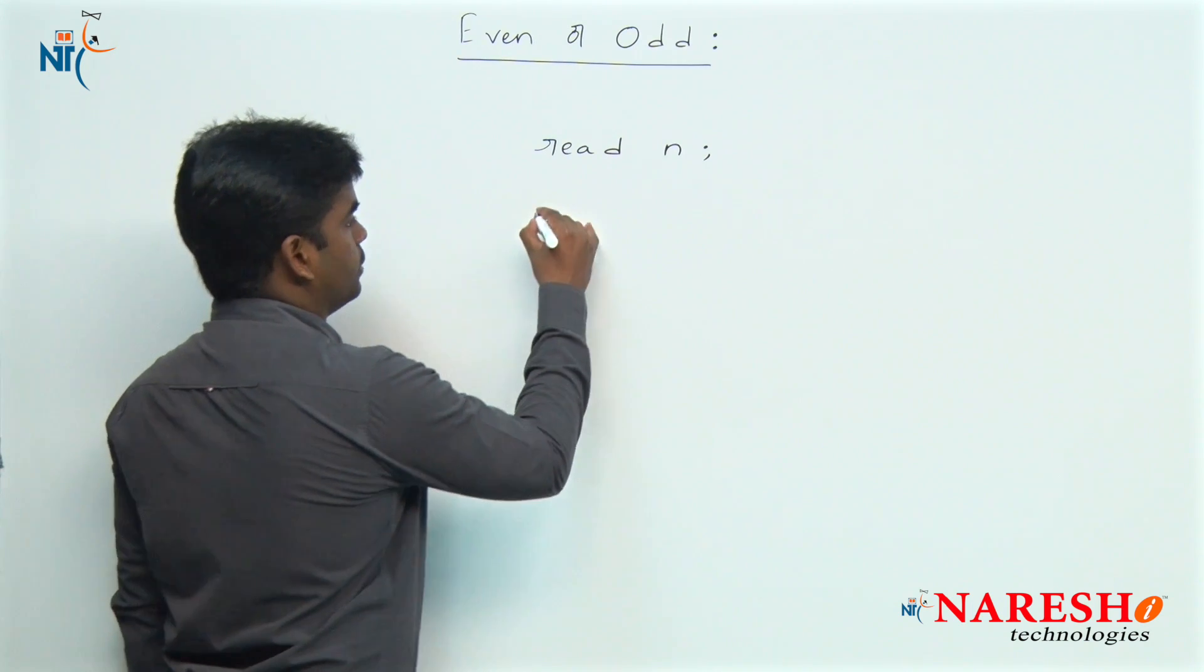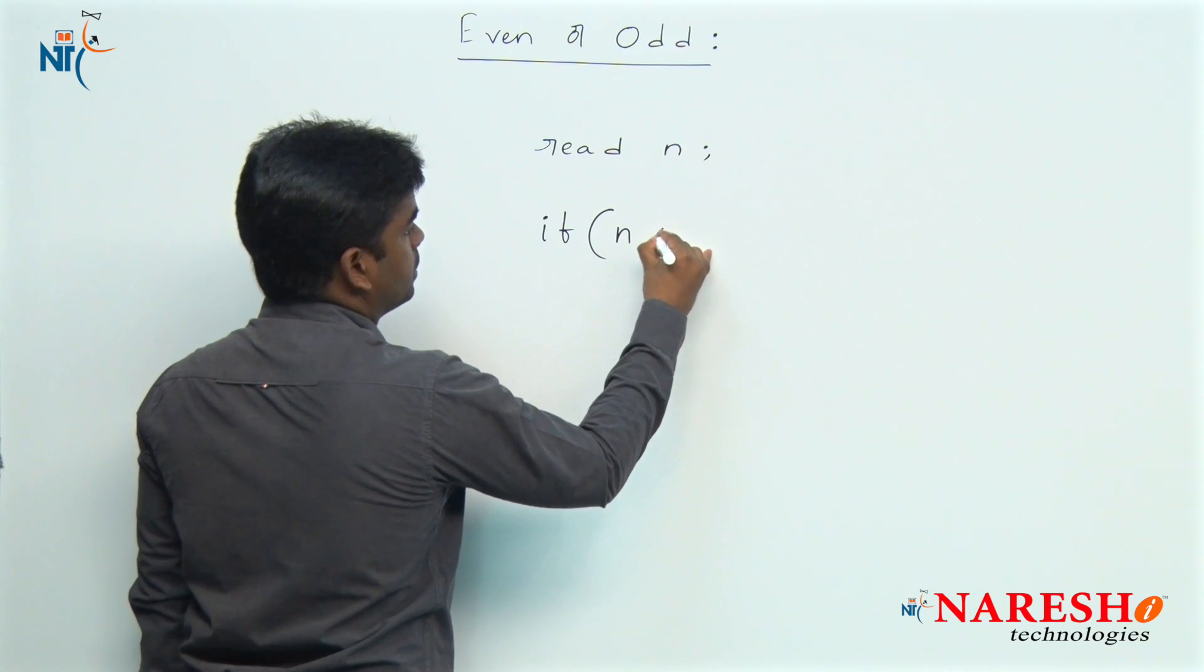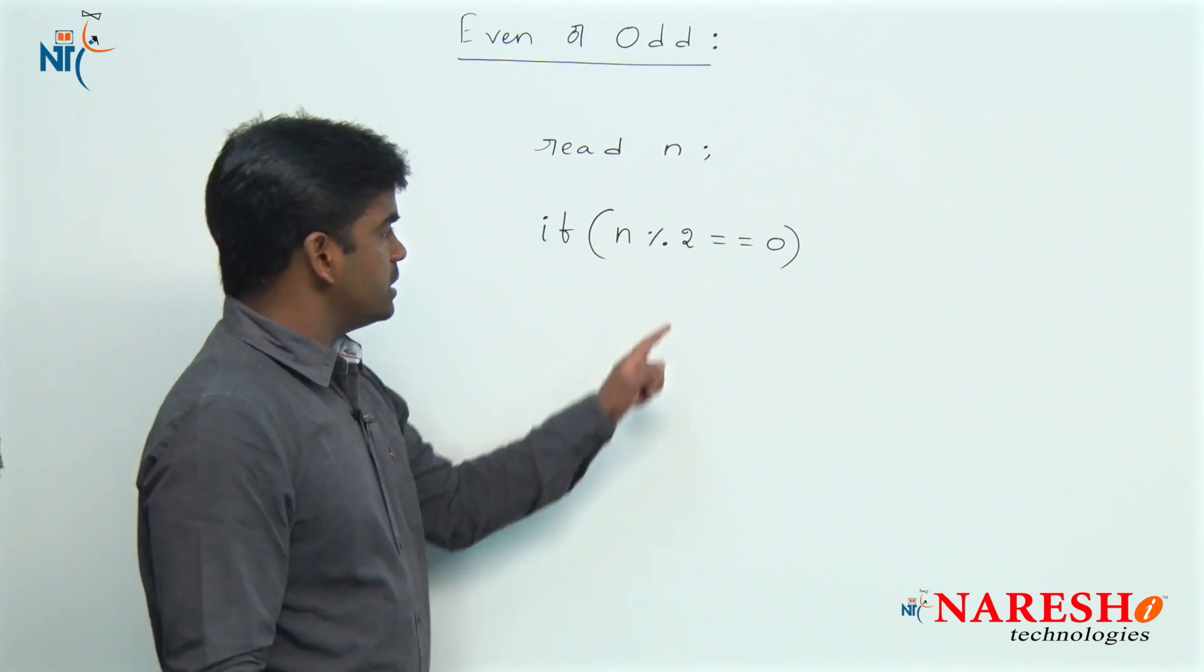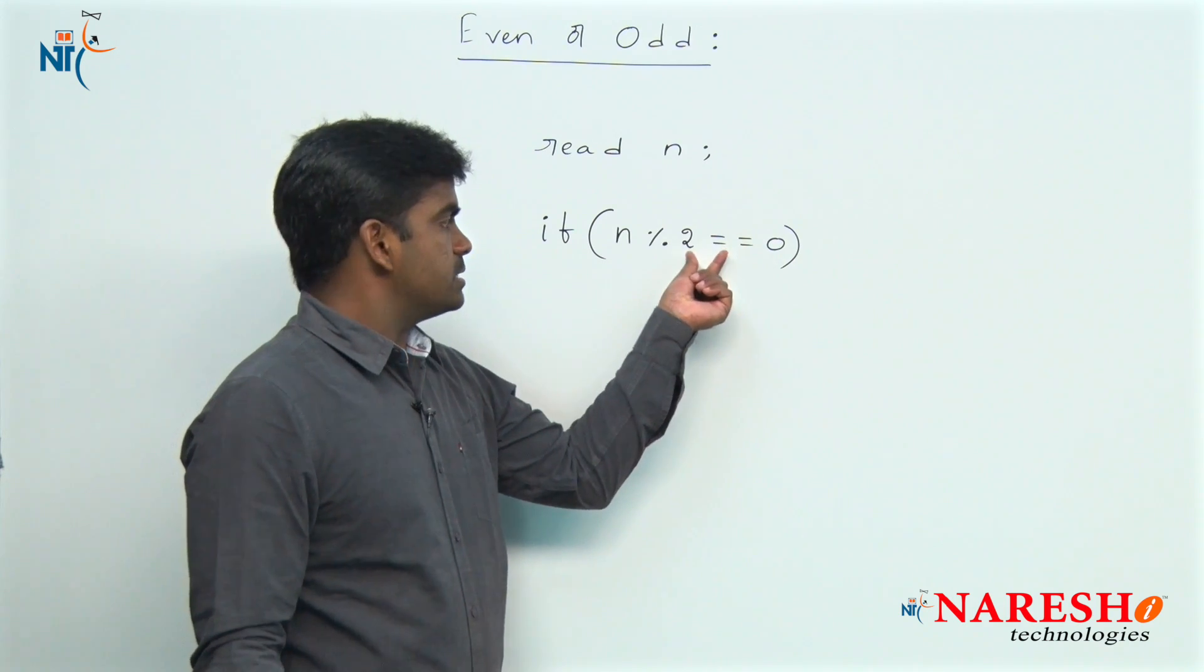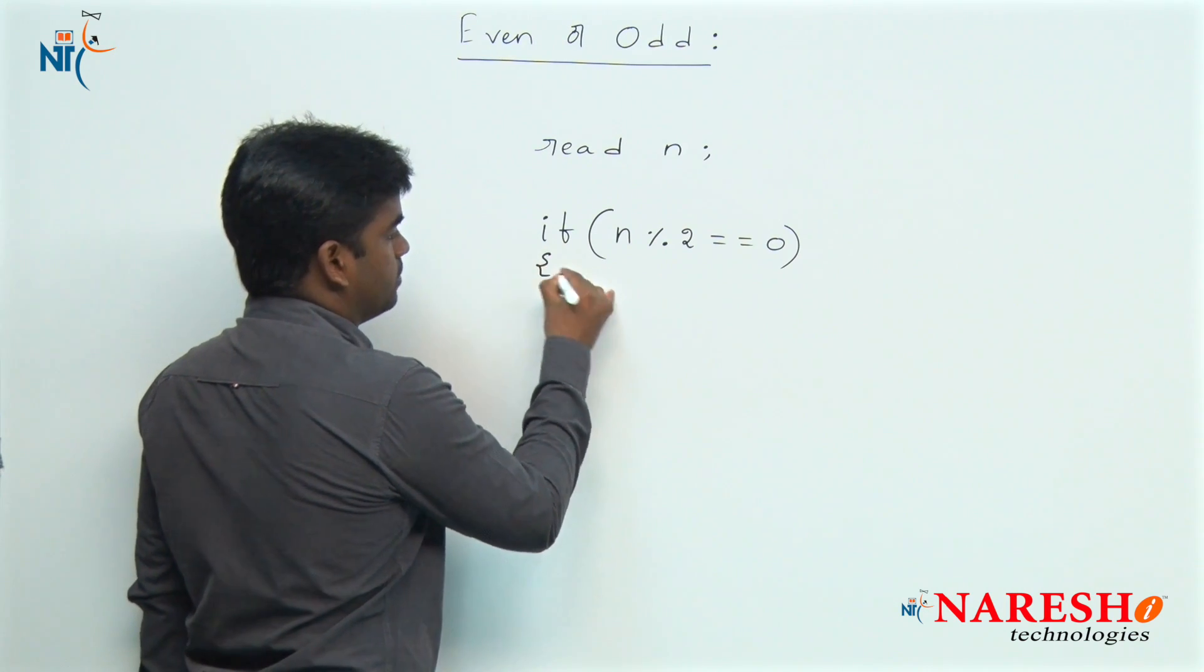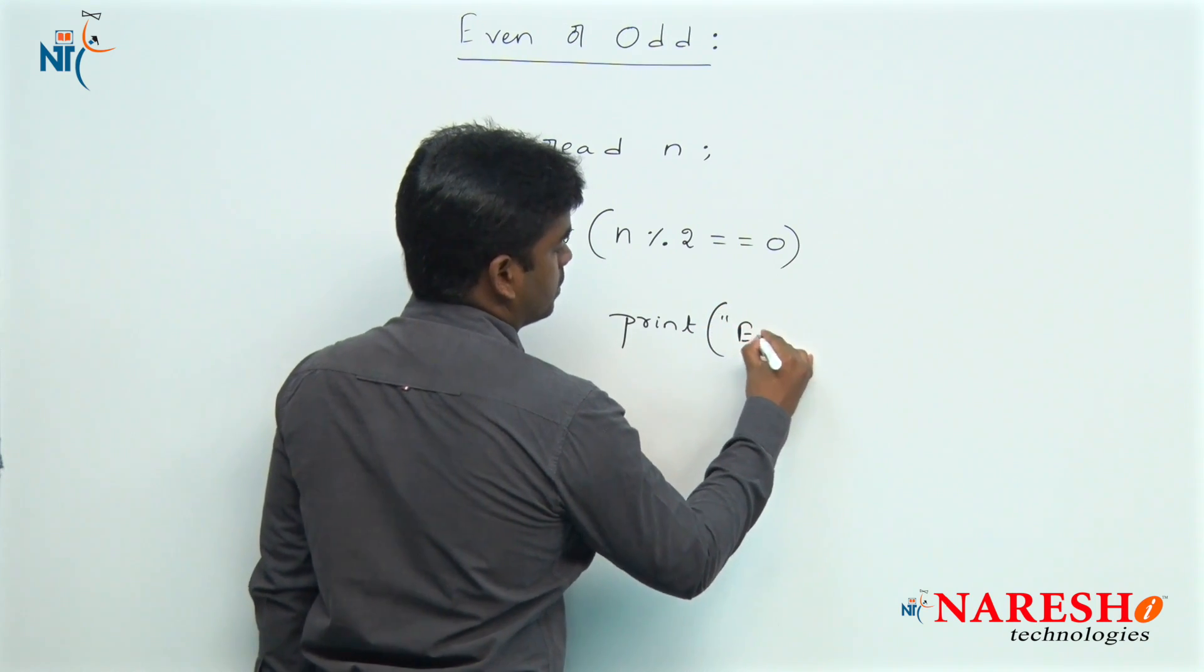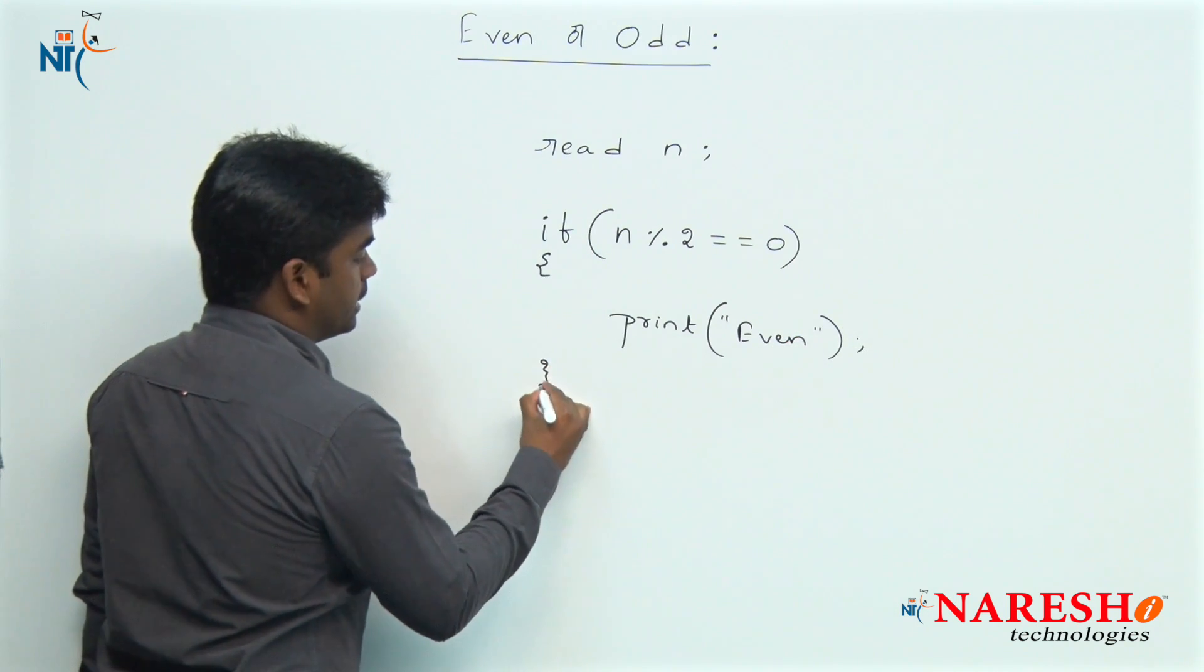The condition is very easy. If the number, whenever you divide with 2, if it is divisible, how can we say that? If the remainder equals to 0. Simply we are printing, it is an even number. Else it is odd number. Directly no need to check the condition, print odd number.